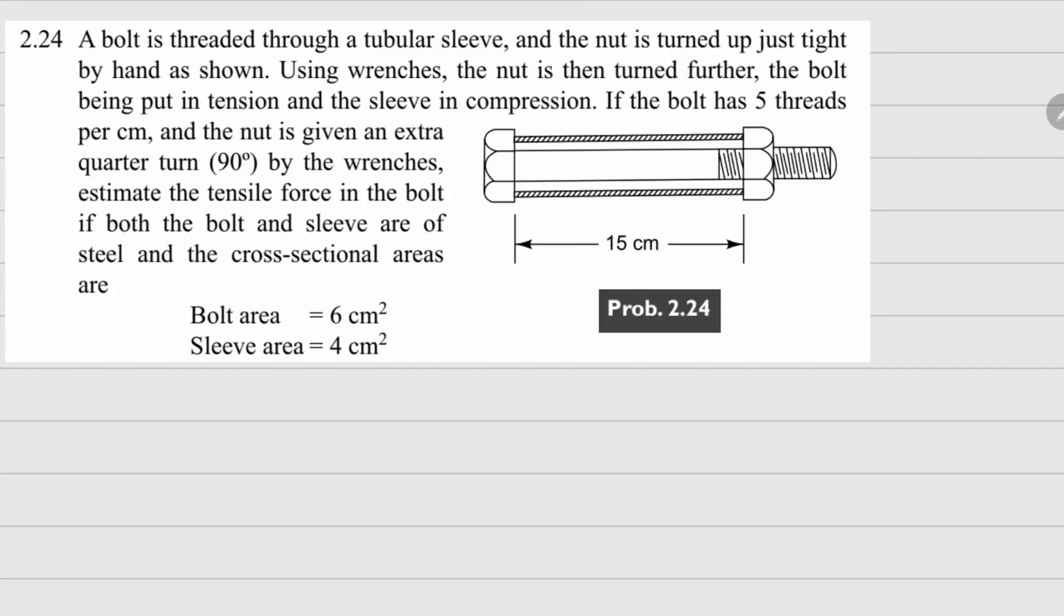This is problem 2.24. Here we have a bolt which is threaded through a tubular sleeve. This is the sleeve, this is your nut, and this is your bolt. In the beginning, it is just tight by hand. After that, we are using a wrench to turn it further so that the bolt goes under tension and the sleeve goes under compression.